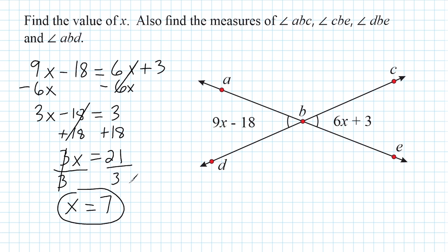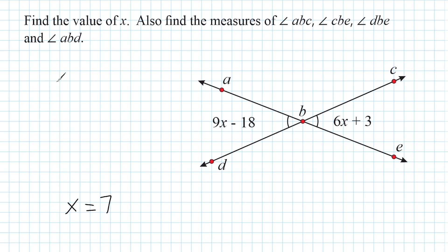That doesn't yet tell us the measures of these different angles. We have to take this 7 and plug it into our expressions to figure out what the angle measures actually are. Let's start with the expression 6X plus 3, because it's easier to work with. Remember, because these are vertical angles, whatever answer we get on the right will be the same angle measure on the left.